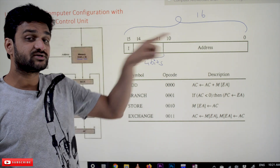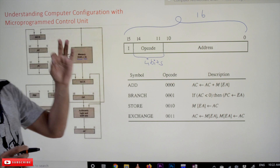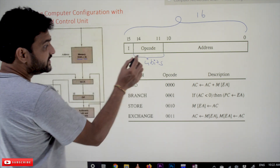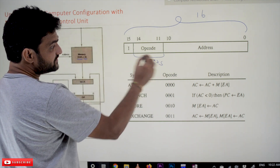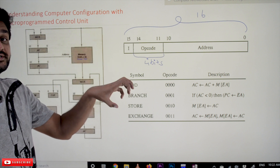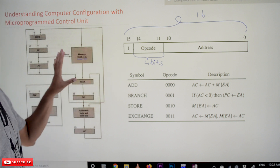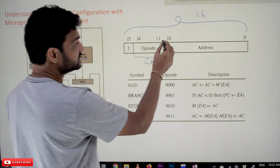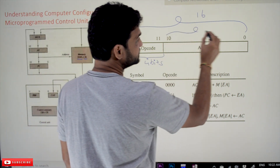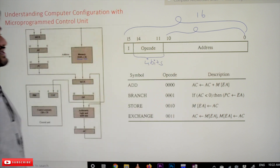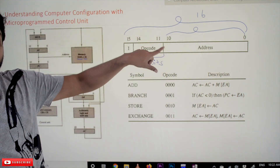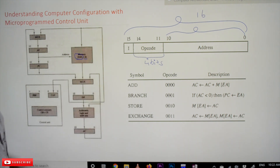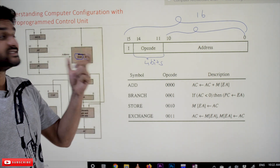In our basic computer the opcode is taking 3 bits, so with 3 bits, 8 instructions can be executed — 7 memory reference instructions are executed. Here 4 bits are there, so 16 micro-operations will get executed on this computer. That is the reason why in the basic computer organization 12 bits are given for the address part, while here 11 bits are given — that is why we get 2048 different locations.